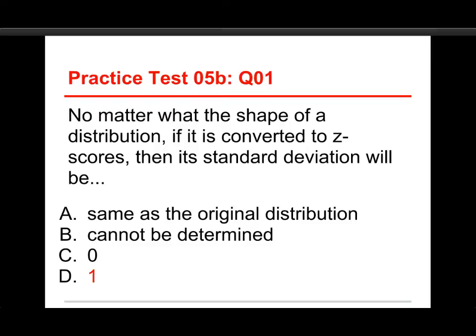The idea, same as the original distribution, that's true of the shape of the distribution. Standardizing it, converting it all to z-scores, doesn't change the shape. It cannot be determined, no, that's not true, we know how standardization works. C is going to be the answer for the mean. The mean becomes 0, but the standard deviation is 1.